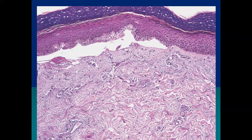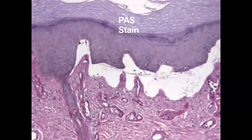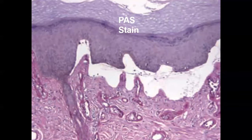If you see a subepidermal blister where the blister cavity contains no infiltrate, this is called a cell-poor blister. Differential diagnoses include epidermolysis bullosa acquisita, epidermolysis bullosa dystrophica, porphyria cutanea tarda, amyloidosis, diabetic bulla, cryotherapy, and traumatic or suction blisters. To diagnose subepidermal blister due to porphyria cutanea tarda, order a PAS stain, which highlights the hyalinized deposit around blood vessels in the upper dermis.